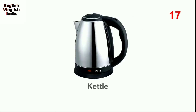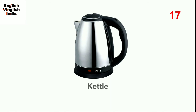Next, kettle — sometimes called a tea kettle. It's a type of pot specialized for boiling water, and by using this we can also make a cup of tea. Next, coffee grinder. A coffee grinder is used for grinding — meaning to make a fine powder of coffee beans.